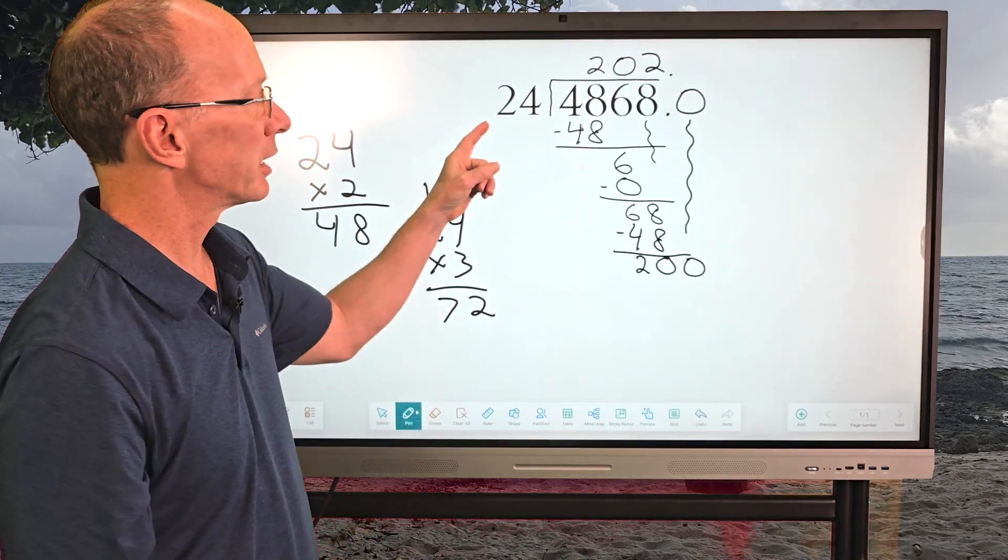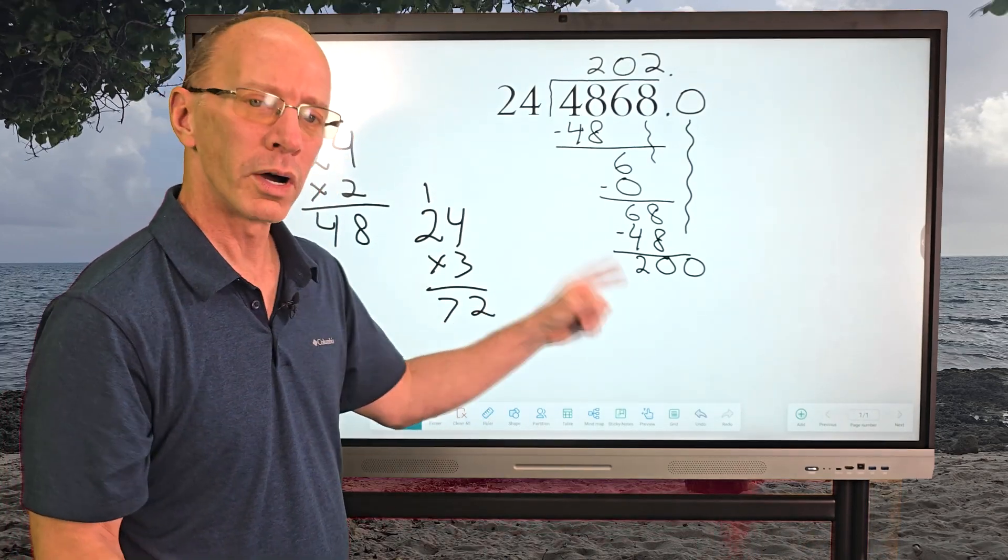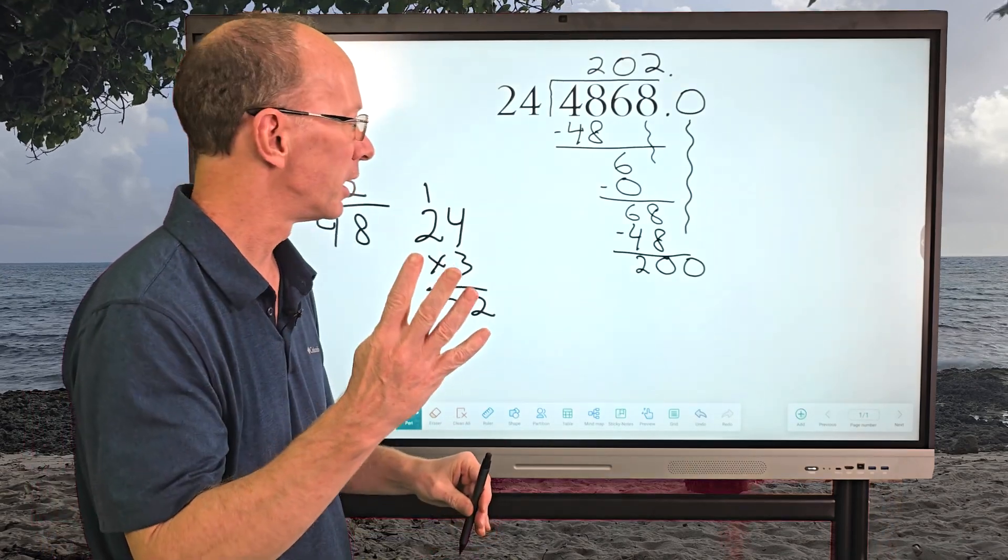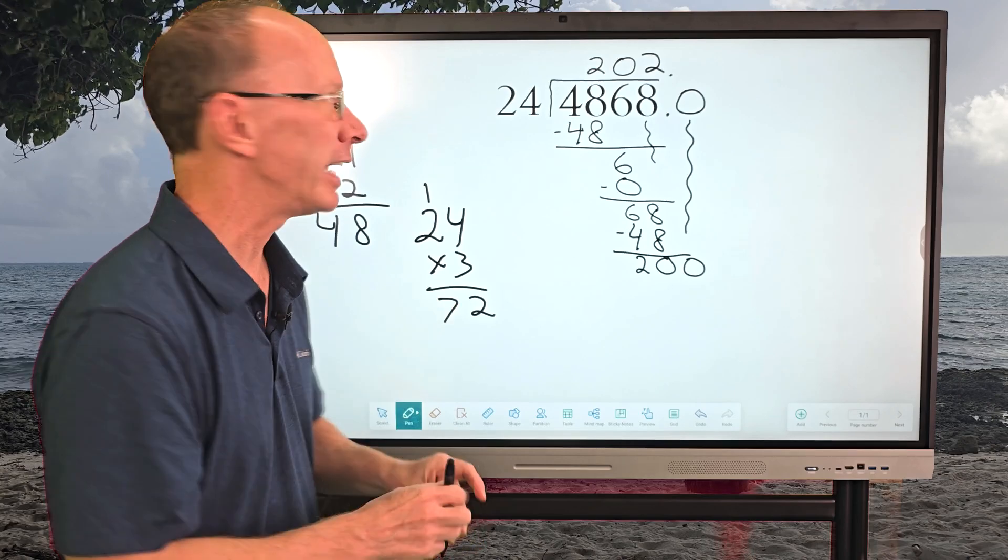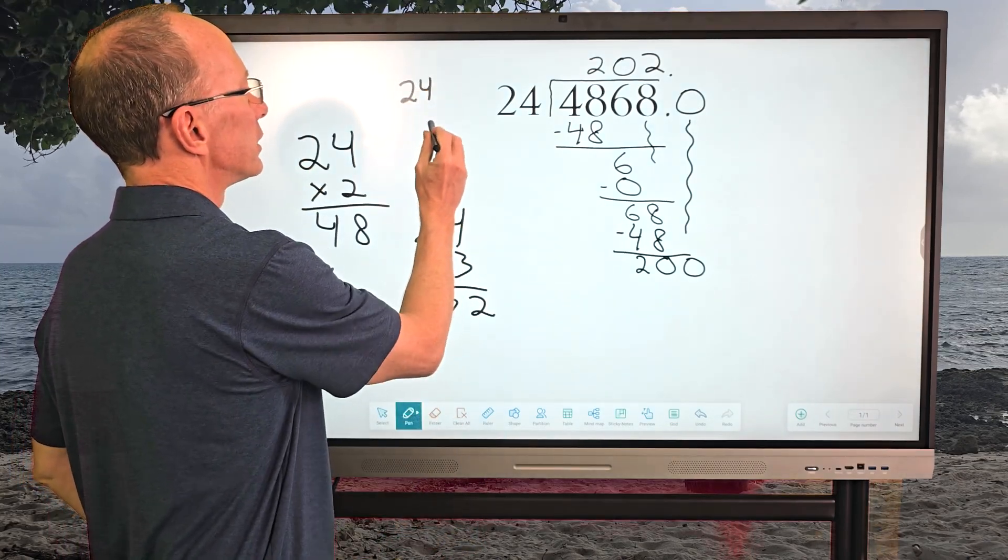So now how many times can I put 24 into 200? Now, if this was 100 and that was like 25, I know I could put it in four times. So let's double that to 8. So let's put, let me see here, 24 right here times 8.